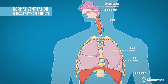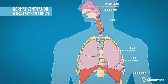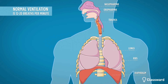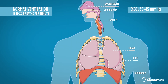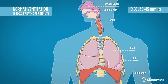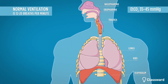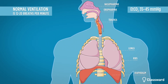With normal ventilation, an average adult will breathe 12 to 20 breaths per minute and will maintain end-tidal carbon dioxide readings between 35 and 45 millimeters of mercury. This is the rate needed to maintain a healthy balance of oxygen coming in and carbon dioxide going out.